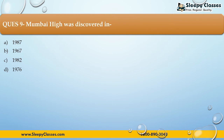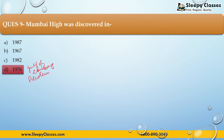The next question: Mumbai High was discovered in — First, 1987; Second, 1967; Third, 1982; Fourth, 1976. The correct answer is option D — 1976. Mumbai High was discovered in 1976 and is located in the Gulf of Cambay. Both petroleum and natural gas were discovered here, and ONGC — the Oil and Natural Gas Corporation of India — operates there to this day.